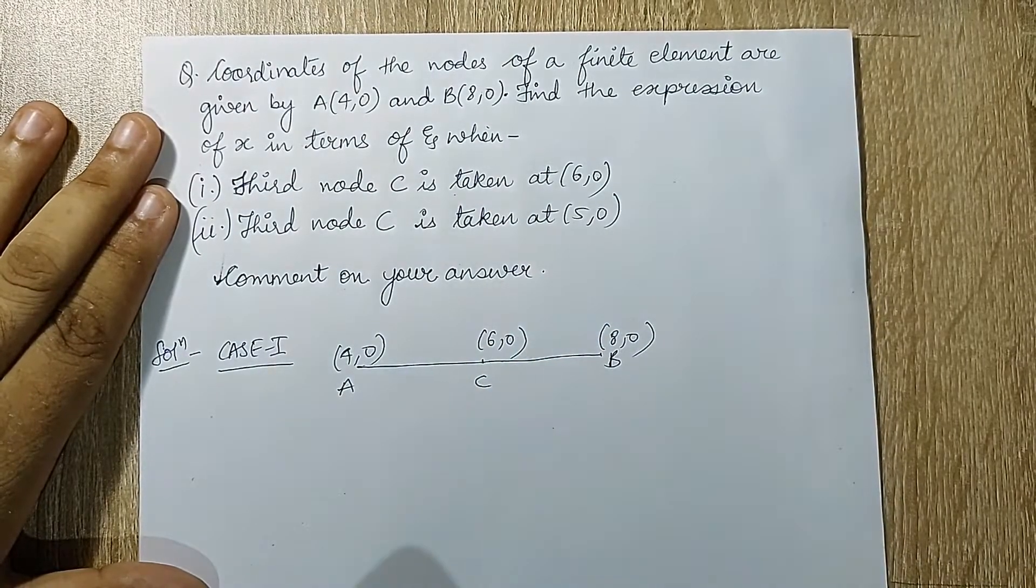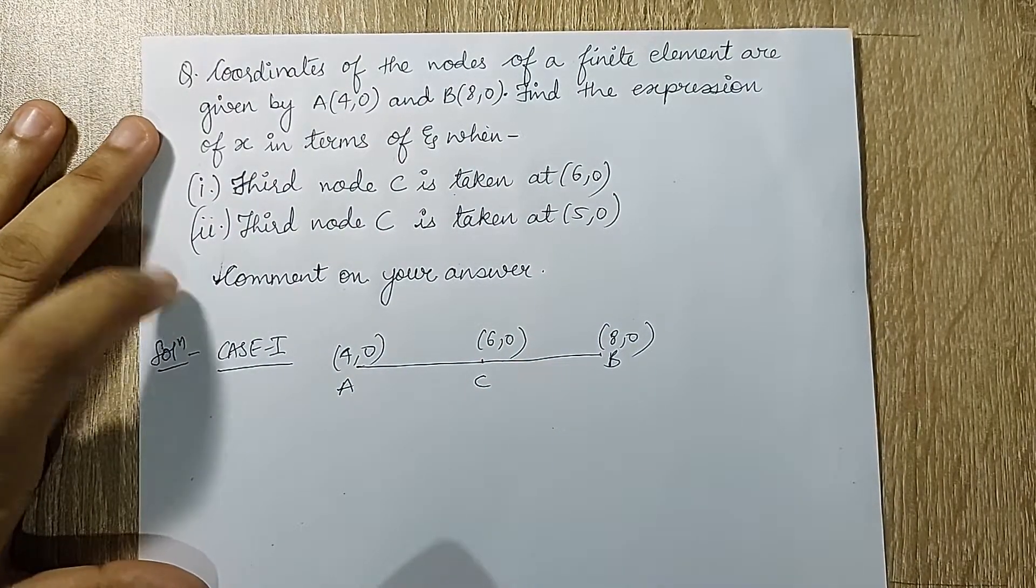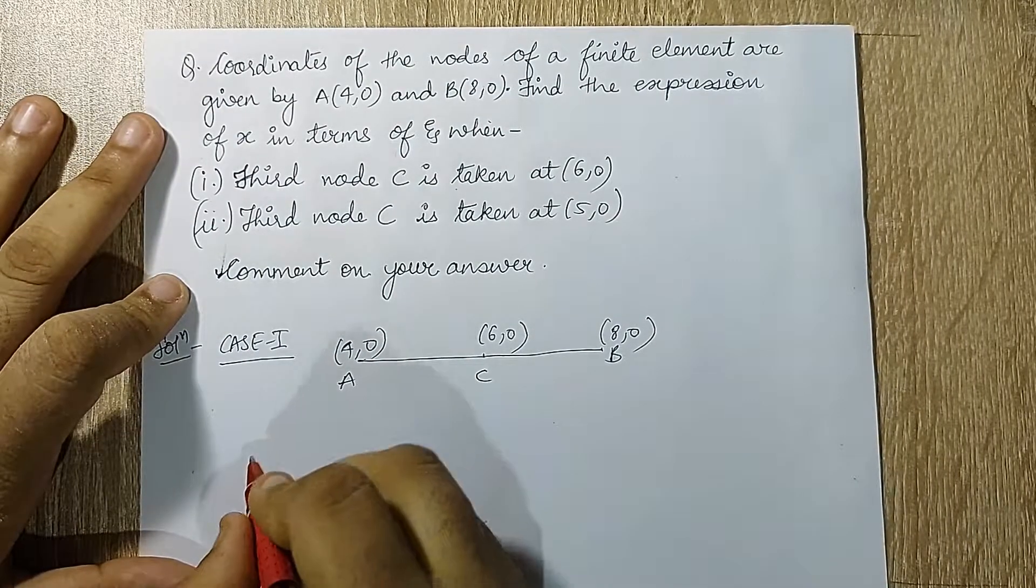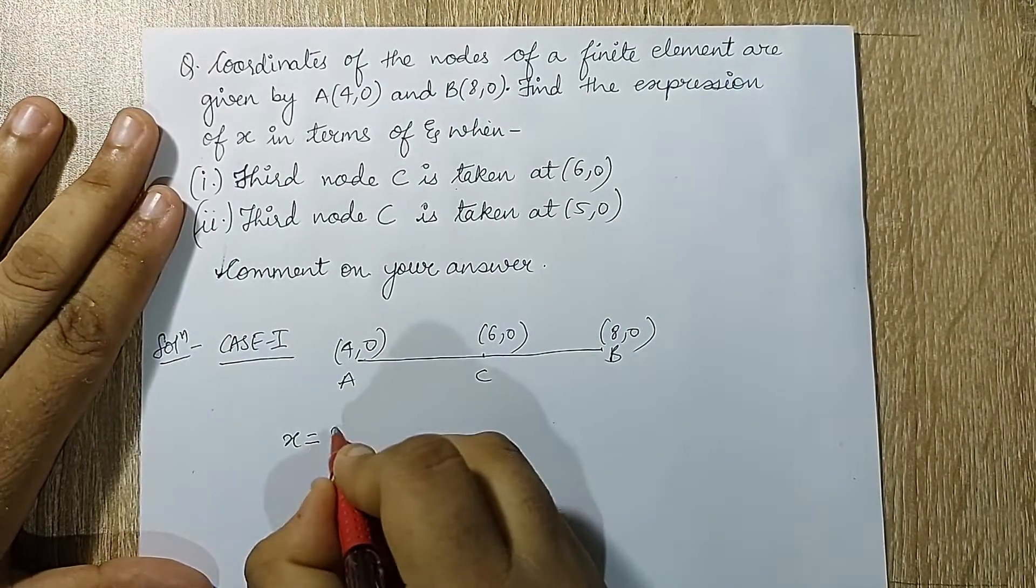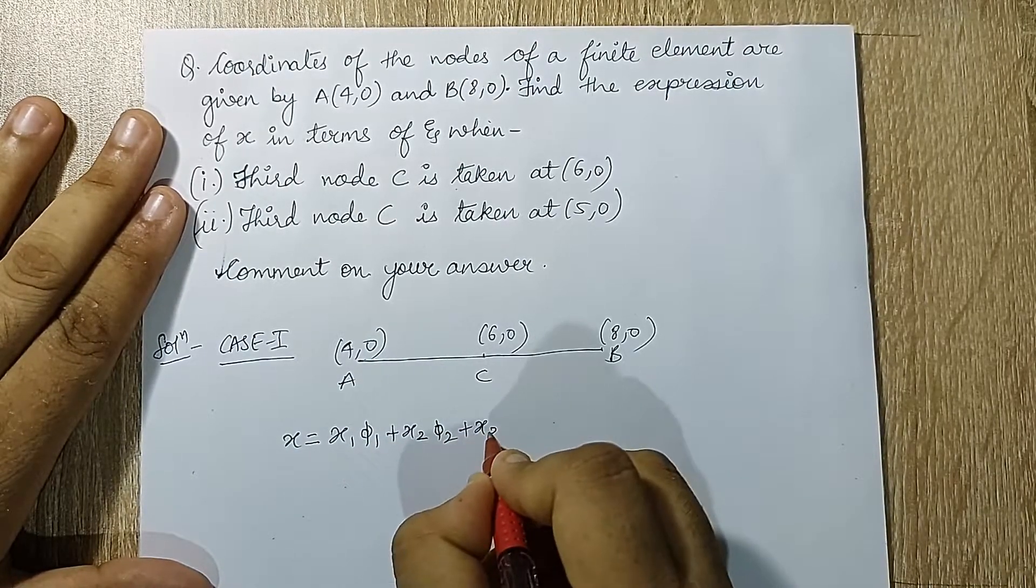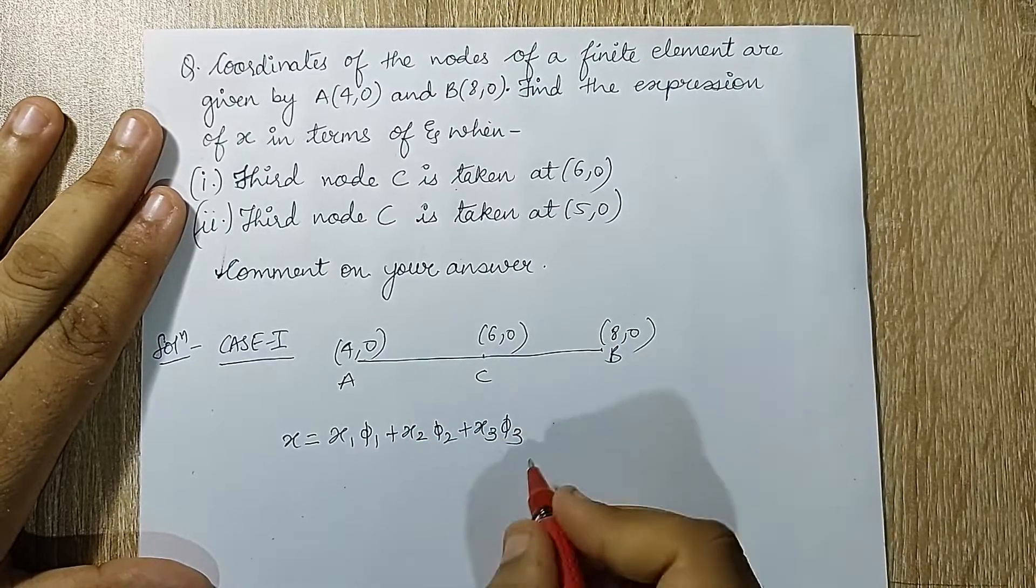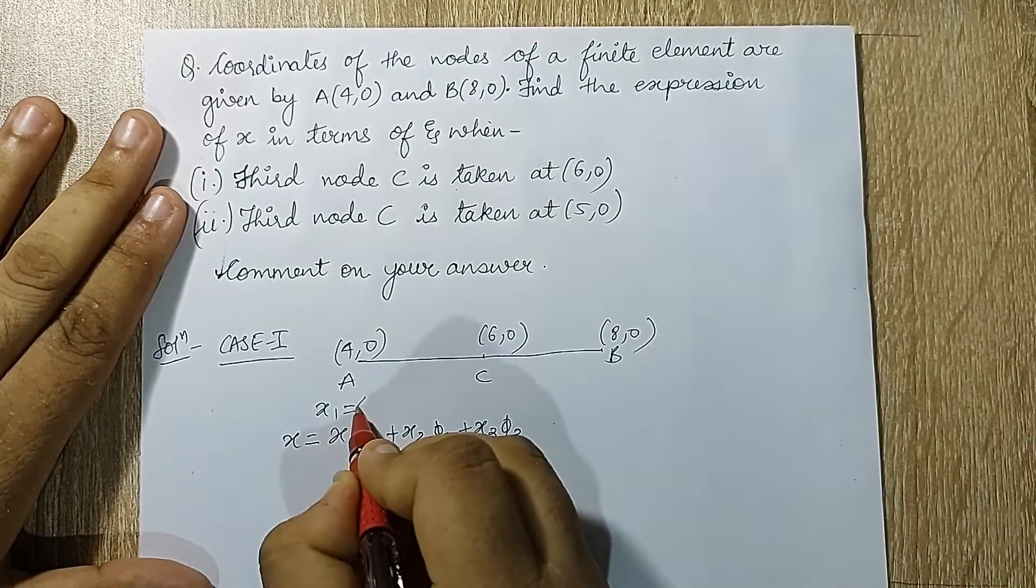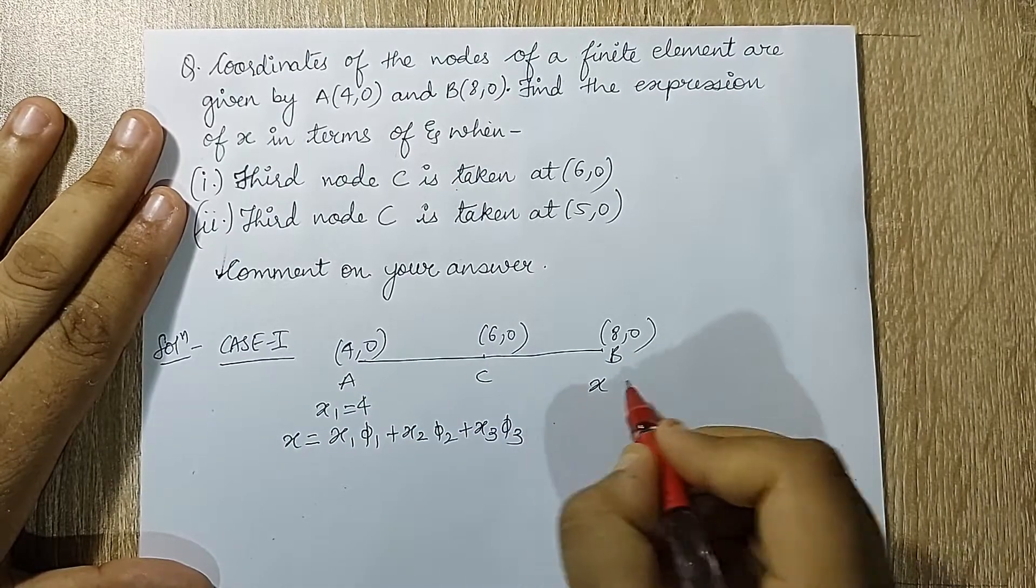So I will write here that this is case 1, so my C is at (6,0). Comment on your answer - this is what I'm supposed to do. Now let's start with this. I already know x is x1*phi1 + x2*phi2 + x3*phi3. Now since there are three nodes here, so I'm using up to x3*phi3.